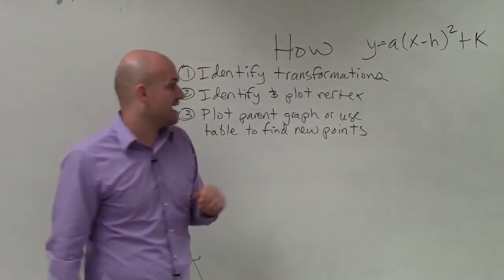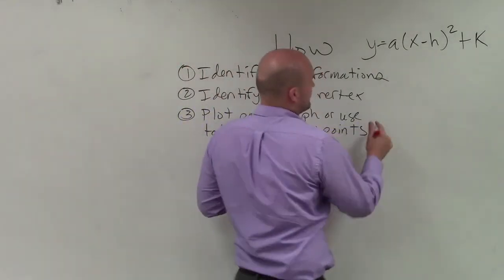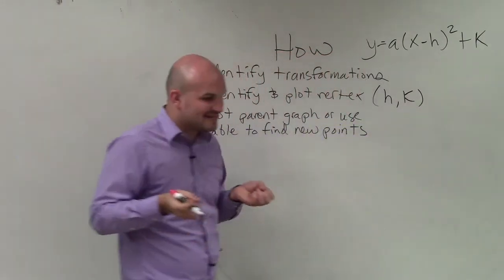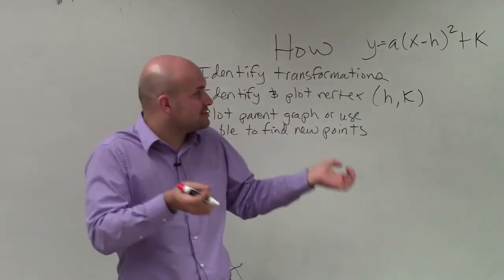The next thing is to identify and plot the vertex. The nice thing about vertex form is our vertex is H comma K. Notice that's x minus the opposite of H plus K.